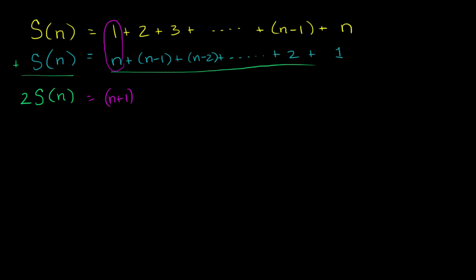And then we're going to add 2 plus n minus 1. So what's 2 plus n minus 1? Let me write it over here. 2 plus n minus 1. This is the same thing as 2 plus n minus 1, which is the same thing as n plus 1. 2 minus 1 is just 1. So this is also going to be n plus 1.